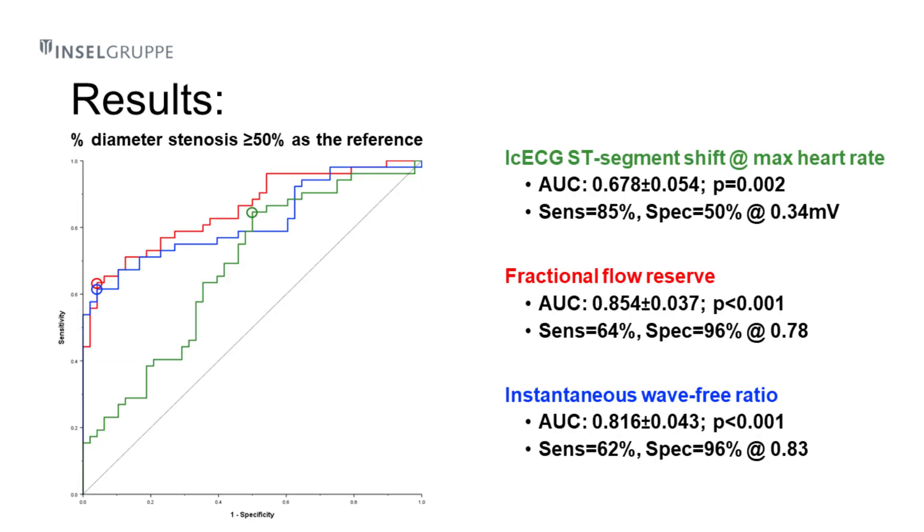As you can see, relevant stenotic lesions are, overall, detected less accurately by intracoronary ECG-ST segment shift during myocardial ischemia than by the fractional flow reserve or the instantaneous wave-free ratio.